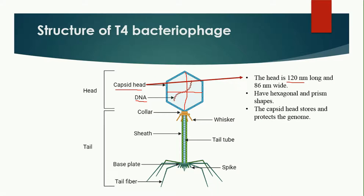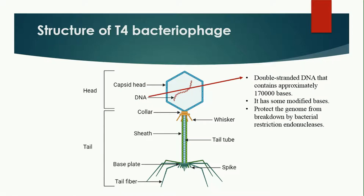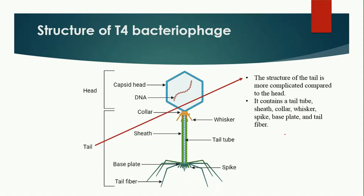The DNA present in T4 bacteriophage is double-stranded and consists of 170,000 bases. Some bases inside the DNA are modified, and the benefit of these modified bases is that the DNA is protected from bacterial restriction endonucleases — the enzymes that degrade DNA. When this DNA gains entry inside the bacteria, those restriction endonucleases cannot degrade it.